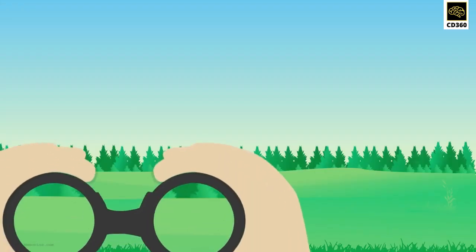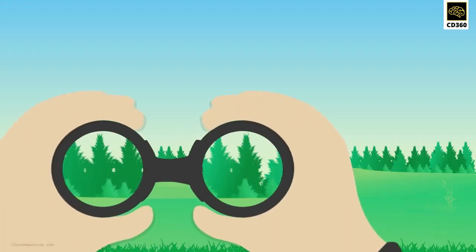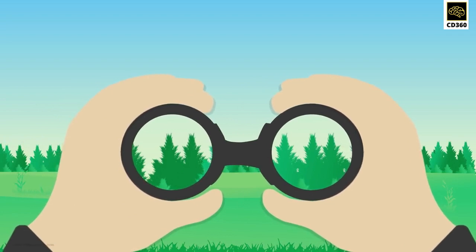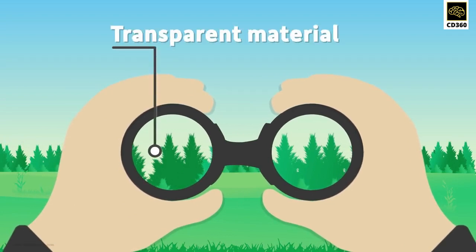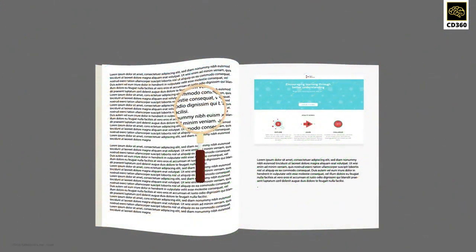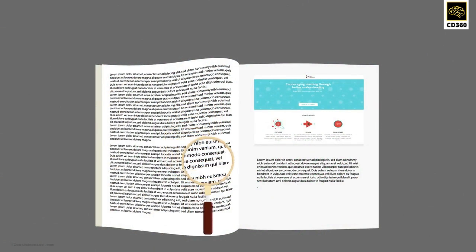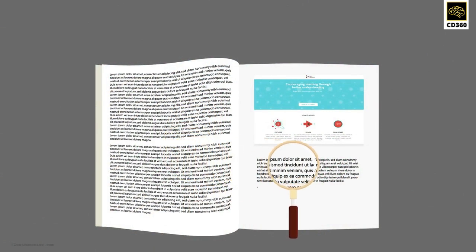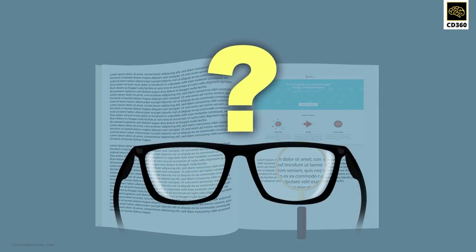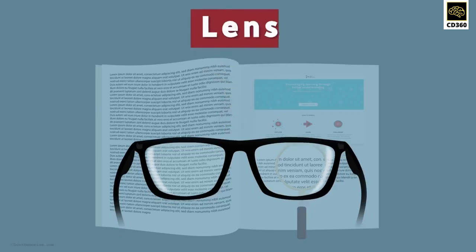Have you ever wondered why faraway objects appear close when viewed through binoculars? What are the two transparent materials in front of binoculars that make objects appear nearer? What do we use to see very tiny things or read text with small font size? Why do we wear spectacles? The answer to all these questions in one word is a lens.